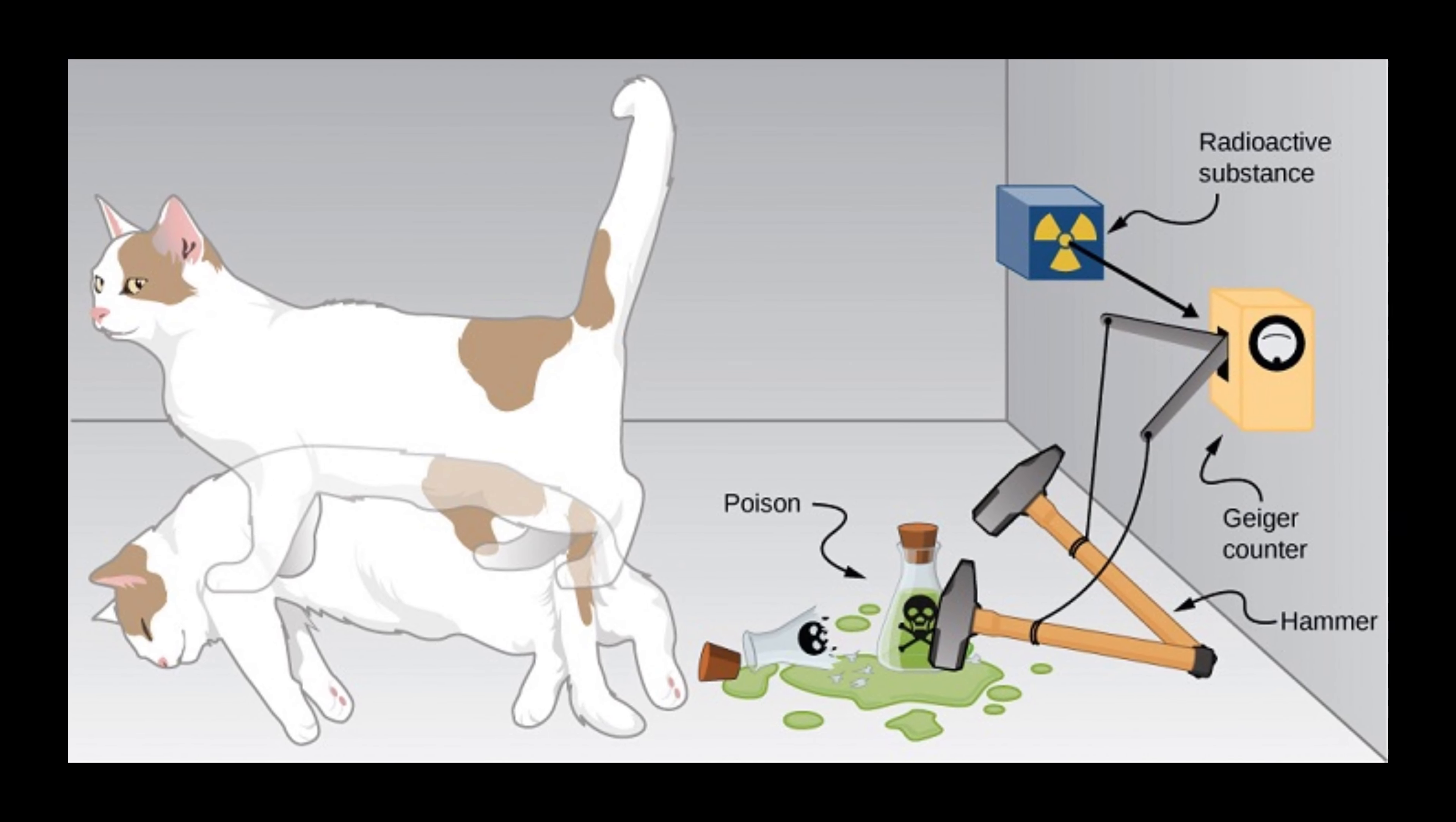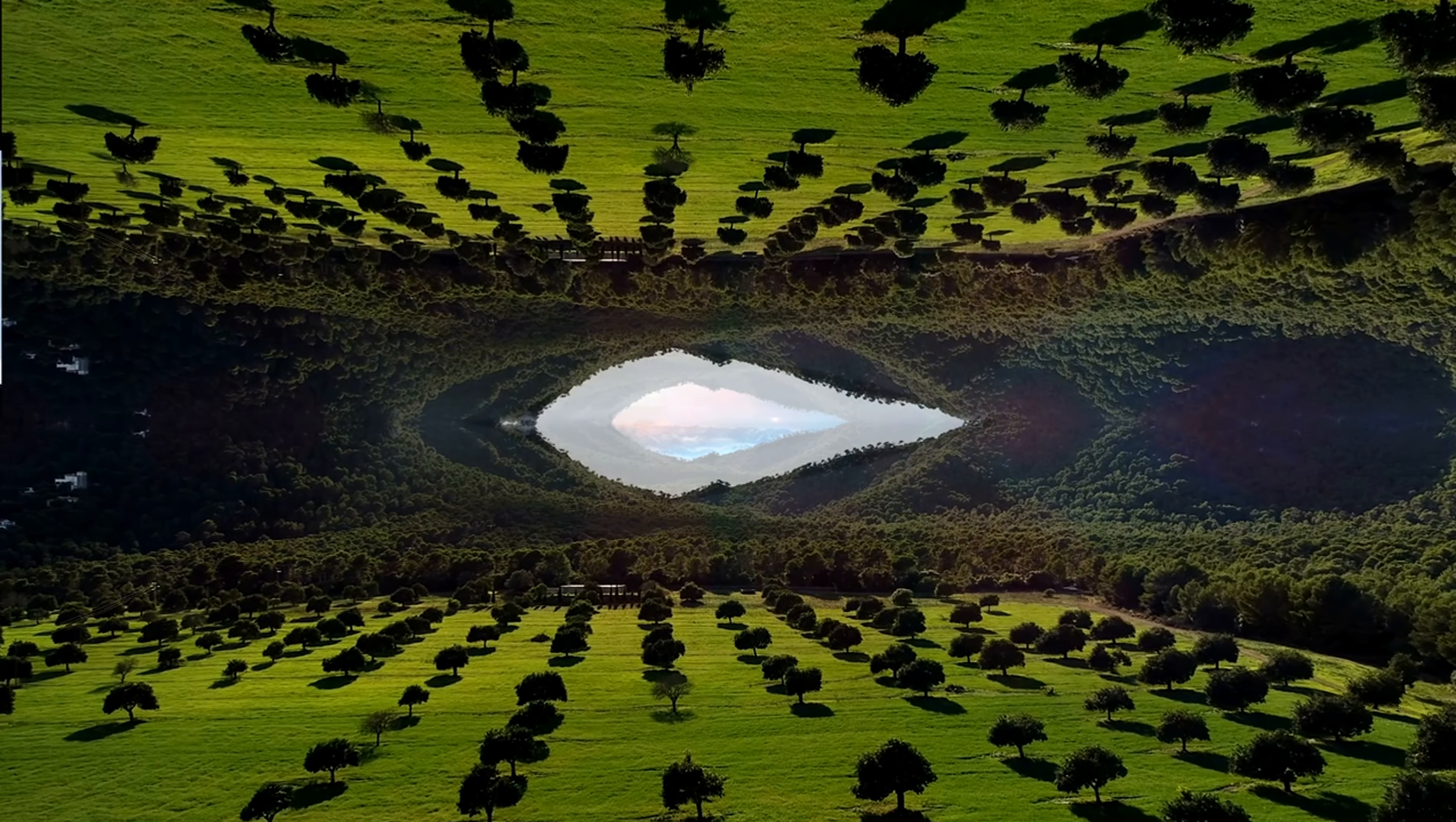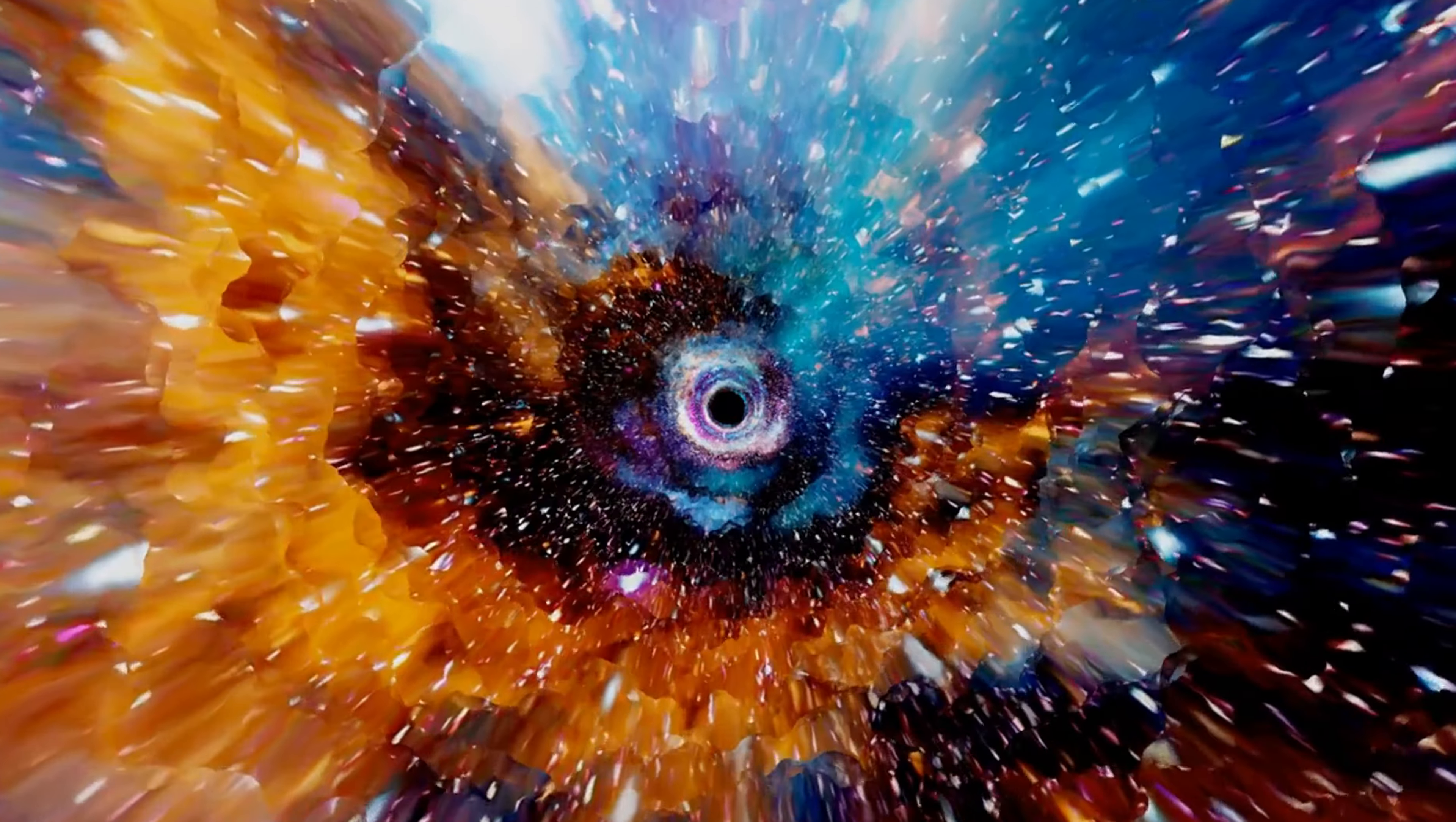For example, there is the famous case of Schrödinger's cat, where opening a box creates a universe with its own scenario. The cat can be either alive or dead. The universes are in parallel realities, where all possible states of the cat remain real, and none of them lose their existence.